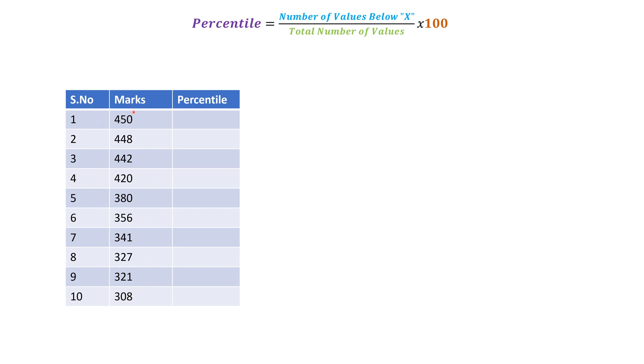Now let us try to calculate the percentile of the person who got 420 marks and who is in fourth position. With this data, let us start applying the formula: percentile equals number of values below X.